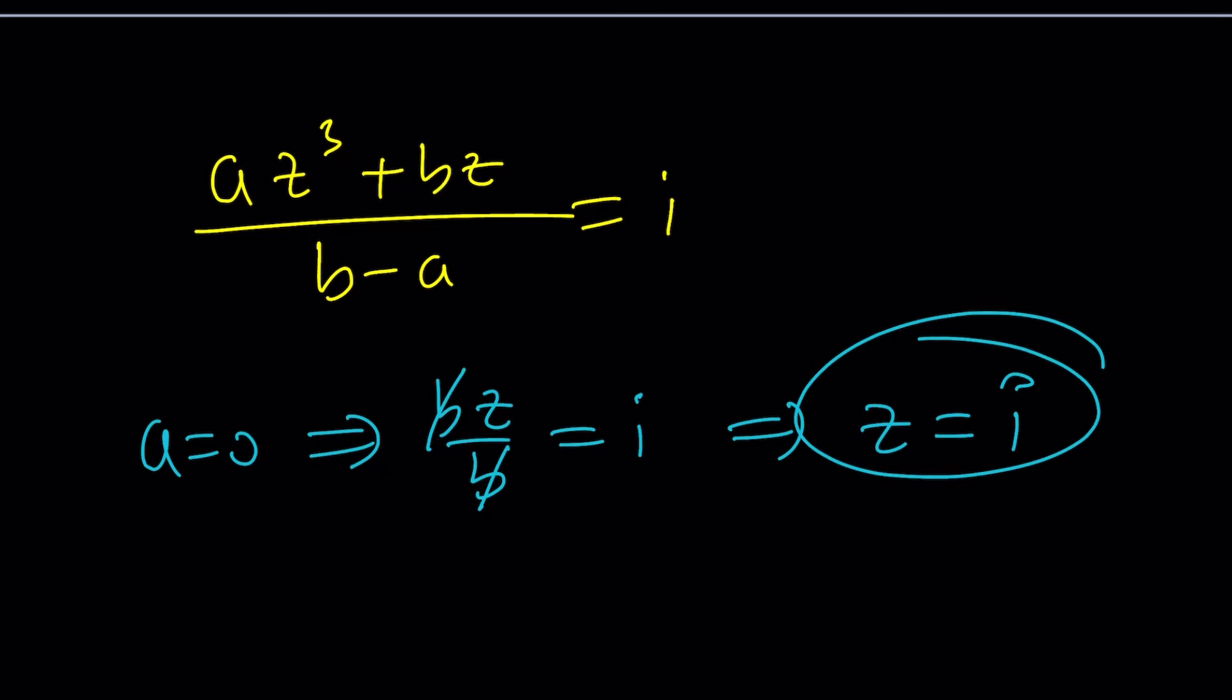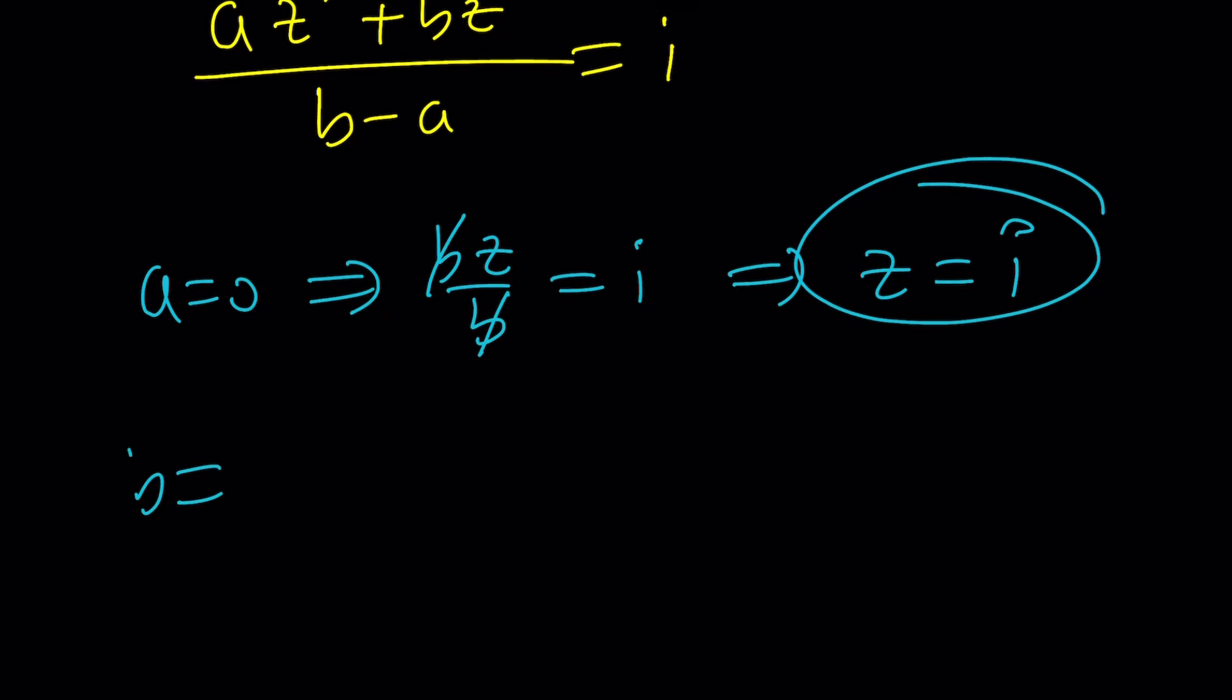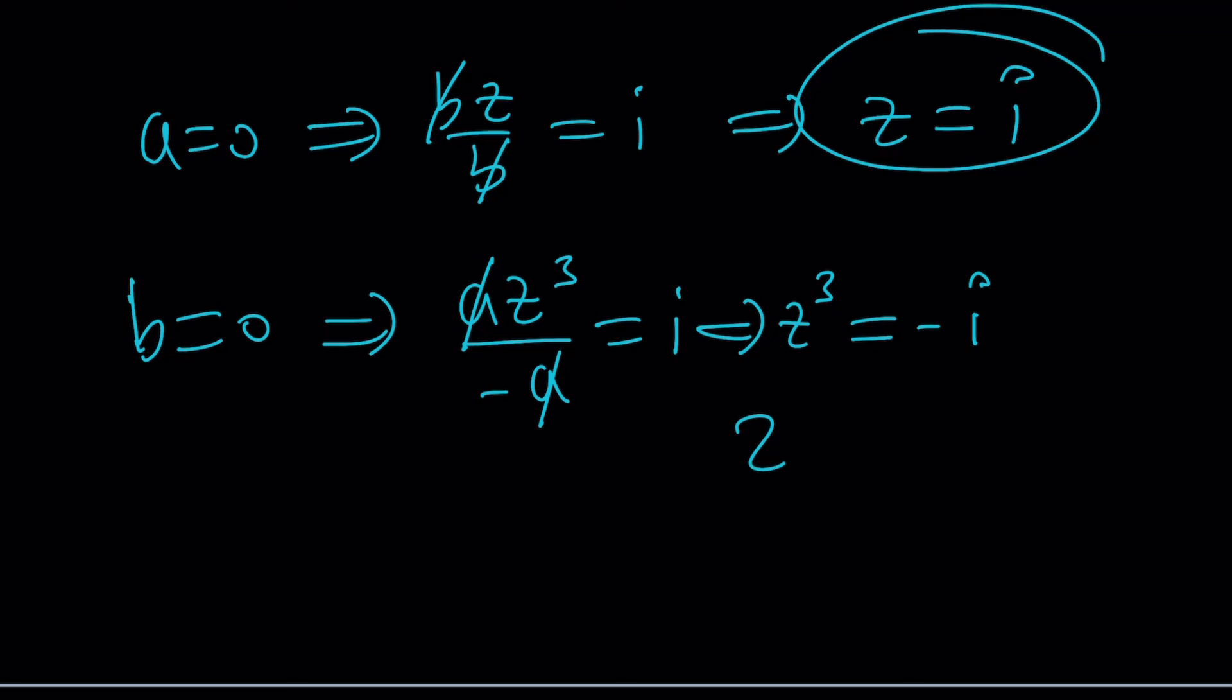But if B and A are both zero, obviously, they can't be equal. So this is going to fail. If B is zero, let's just look at it separately. We're going to get AZ cubed divided by negative A equals I. A is going to cancel out. We're going to get Z cubed equals negative I. Z cubed equals negative I. And you know what that means? Z equals I.